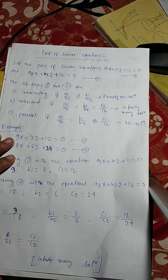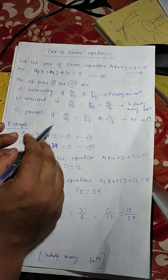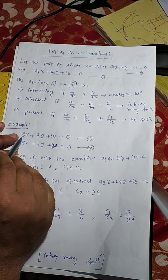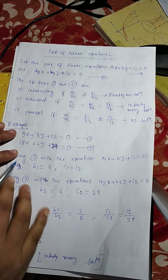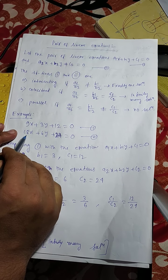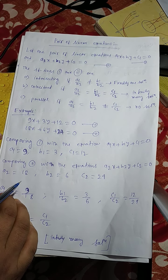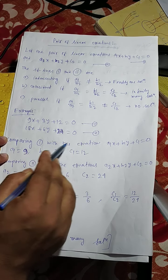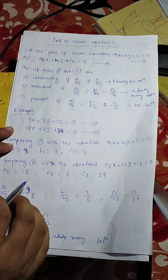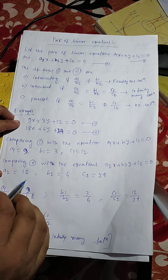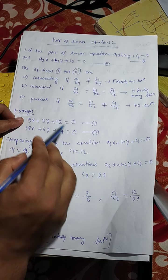Now I am giving an example. The pair of equations are: 9x plus 3y plus 12 equals to 0 — this is equation number 1. Comparing equation 1 with a1x plus b1y plus c1 equals to 0, we get a1 is 9, b1 is 3, and c1 is 12.